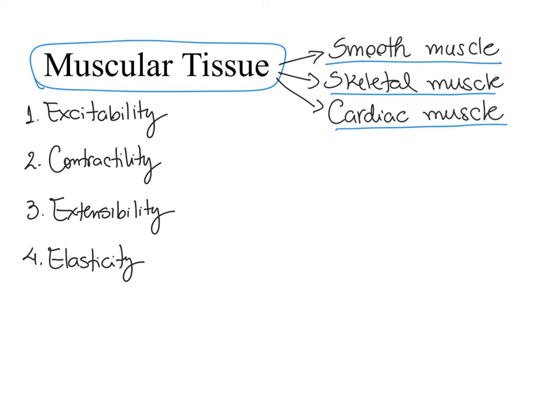What do you believe the word excitability means? This means that a muscle cell can be excited. I told you in the nervous tissue class that in our body we only have two cell types that are excitable: muscle cells and nerve cells. Being excitable means that muscle cells and nerve cells can go from being polarized cells to being depolarized cells.